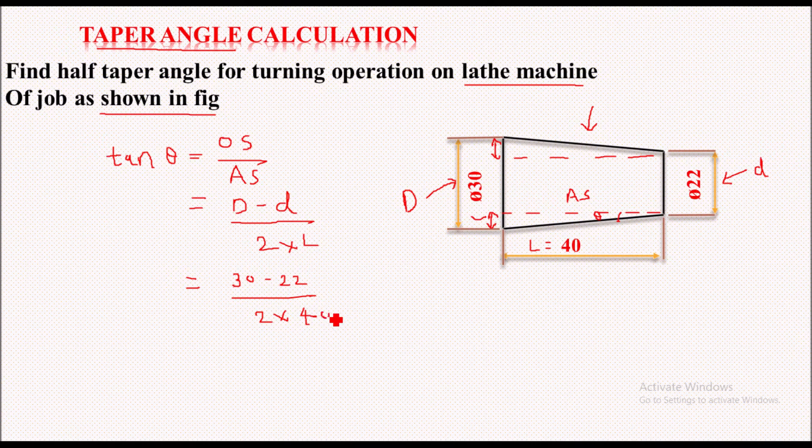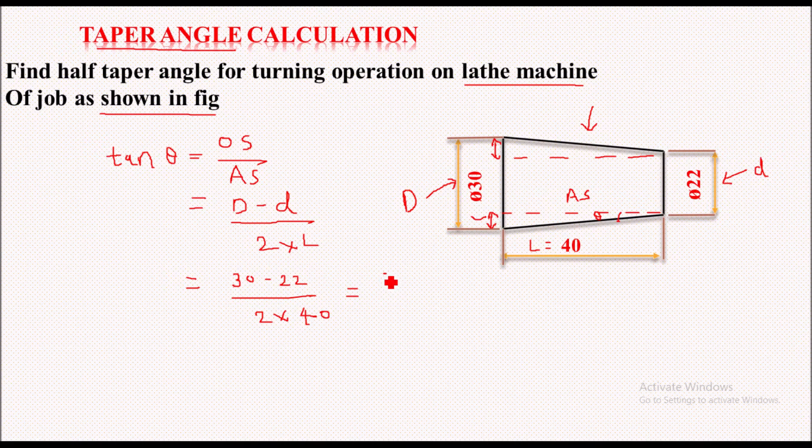So we will further solve it. 30 minus 22 will become 8 mm, while 2 into 40 will become 80.